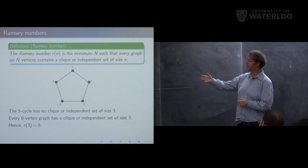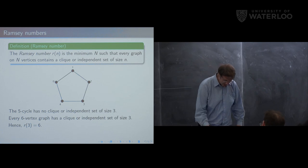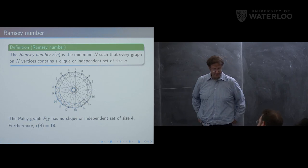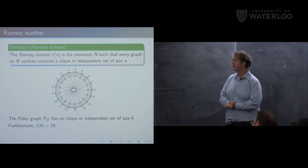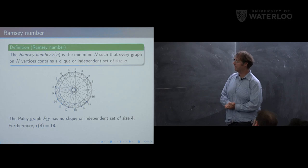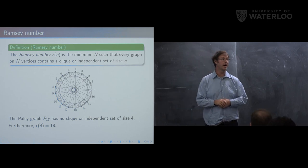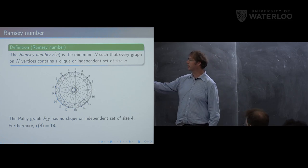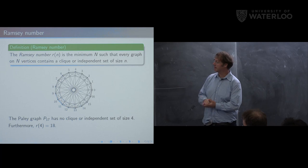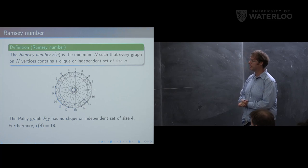Showing that r(3) = 6 was actually a problem on the 1953 Putnam exam. For the next Ramsey number, there's a particular graph on 17 vertices from the family of Paley graphs. You can check that any four vertices of this graph have a pair that's adjacent and a pair that's not adjacent — so there's no clique or independent set of size four. But every graph with 18 vertices must have one, so r(4) = 18.